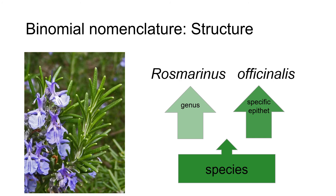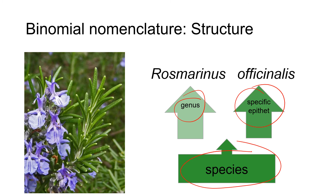Together, the two words — Rosmarinus officinalis — are the species. You may also hear the species referred to as the Latin binomial, the Latinized binomial, the botanical name, or the scientific name. These all mean the same thing. Also remember that species is one of those words that is the same in both the singular and plural — we talk about one species or two, three, four species. There's no change in the pronunciation or spelling of species.